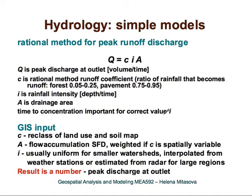As an example of simple models, let's look at one of the simplest methods for estimating peak runoff discharge — the so-called rational method — to show how these simple methods are linked to GIS. With this method, we compute the peak discharge at the outlet of a watershed as a function of a runoff coefficient. This coefficient is an empirical coefficient based on experiments that reflects the ratio of rainfall that becomes runoff. It essentially incorporates the processes of vegetation interception of rainfall as well as infiltration — very complex processes captured by a single number.